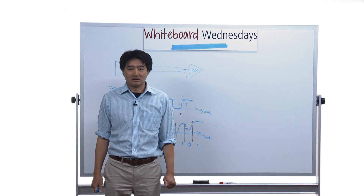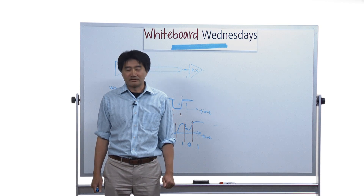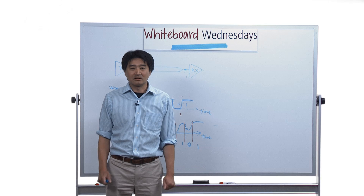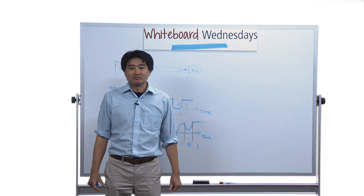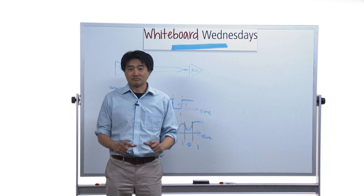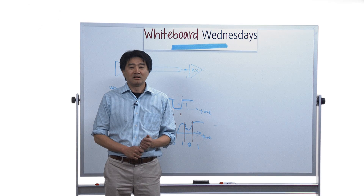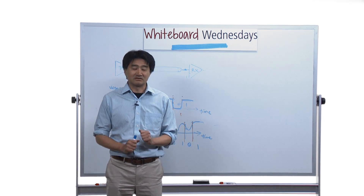Today I want to talk about the eye diagram. The eye diagram is a very useful tool for design engineers to gauge the quality of a signal. It contains a lot of information. For an untrained eye, you probably just see a plot that looks like an eye. But for the trained eye, you can extract a lot of useful information. After this short talk, I hope to give you that trained eye.